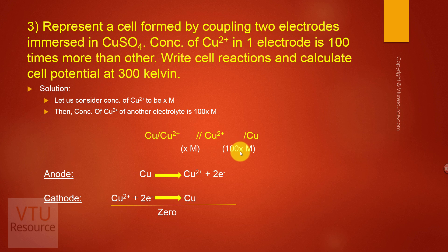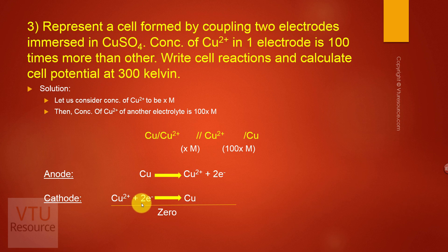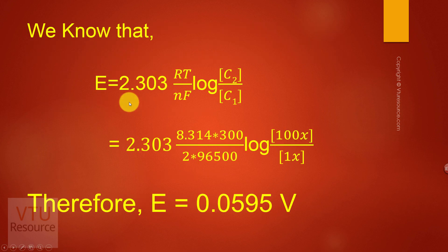Since x molar is less than 100x, x acts as anodic concentration and 100x acts as cathodic concentration. At anode, copper undergoes oxidation to liberate Cu²⁺ ions and two electrons. At cathode, Cu²⁺ accepts two electrons to give Cu. The net reaction is zero.